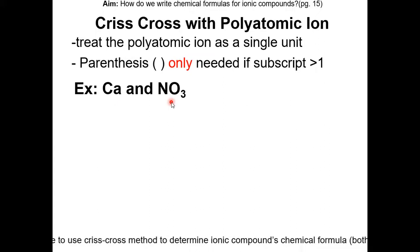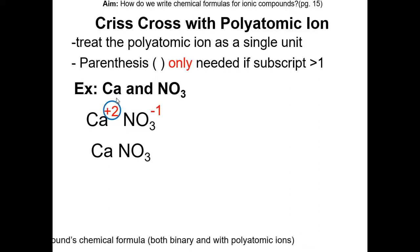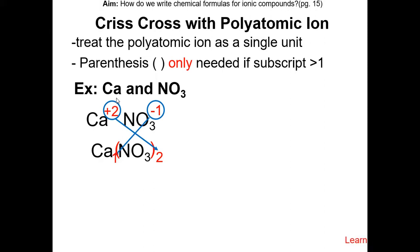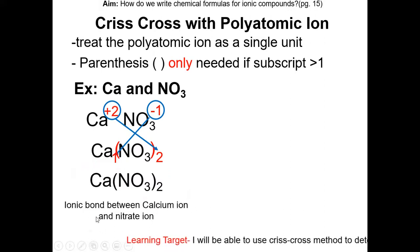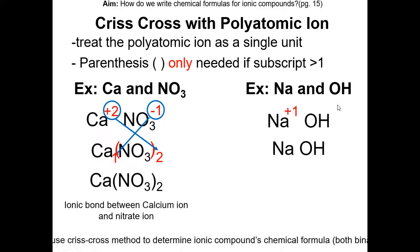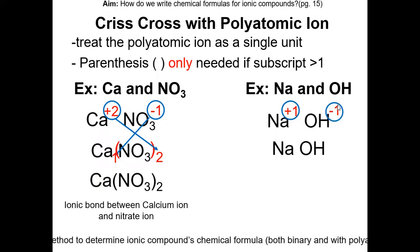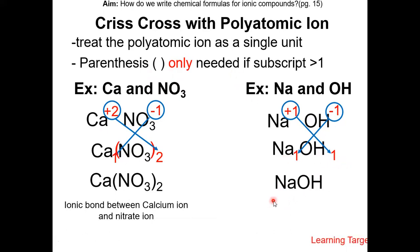Here we have calcium and the nitrate ion. Calcium has a charge of positive 2, and nitrate has a charge of minus 1. If you crisscross the charges, we have to put parentheses for nitrate because the subscript is greater than 1. This would be the chemical formula of calcium nitrate — Ca(NO3)2. There's an ionic bond between the calcium ion and the nitrate ion. For sodium and hydroxide: the charge of sodium is positive 1, the charge of hydroxide is negative 1. Crisscrossing gives a subscript of 1, so we do not need parentheses. Since 1 is invisible, we can just write NaOH — sodium hydroxide.